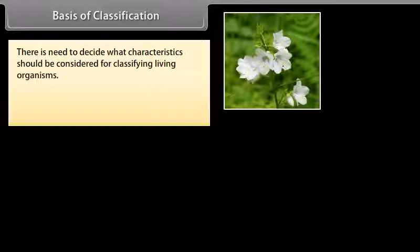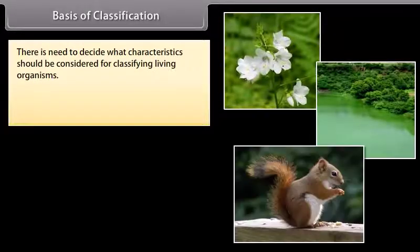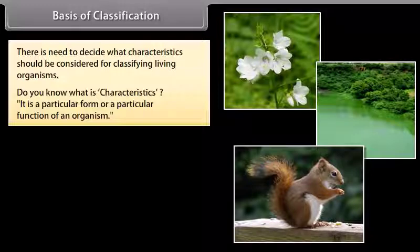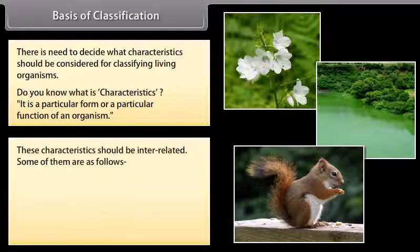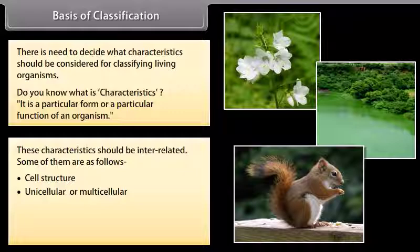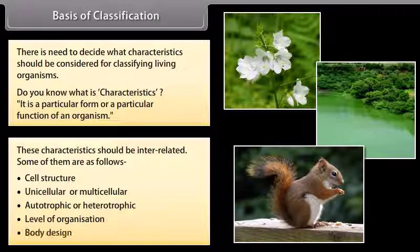So there is a need to decide what characteristics should be considered for classifying living organisms. Characteristics refer to a particular form or a particular function of an organism. These characteristics should be interrelated. Some of them are: cell structure, unicellular or multicellular, autotrophic or heterotrophic, level of organization, and body design.